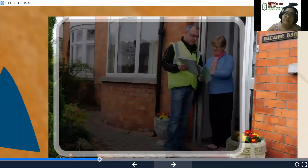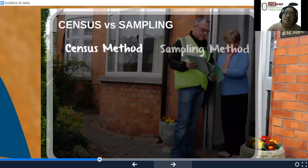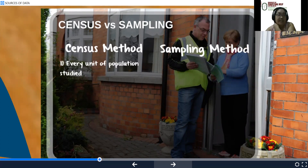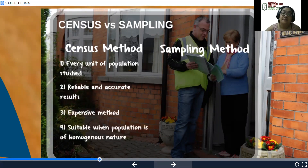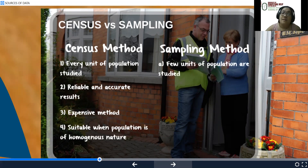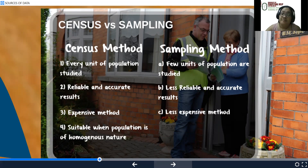Census versus sampling — these are different methods in getting data. For census, every unit of the population is studied, giving reliable and accurate results, but it is expensive and suitable only when the population is of homogeneous nature. For sampling, a few units of the population are studied, giving less reliable and accurate results, but it is a less expensive method and suitable when the population is of heterogeneous nature. We will learn more about sampling in our later lectures.